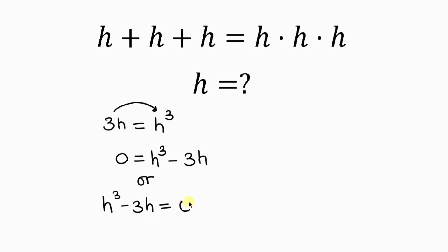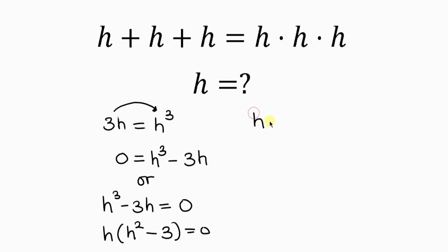Notice that H is common, so we can factor out H: H times open bracket H squared minus 3 close bracket equals 0. So we have two cases: H equals 0, or H squared minus 3 equals 0.